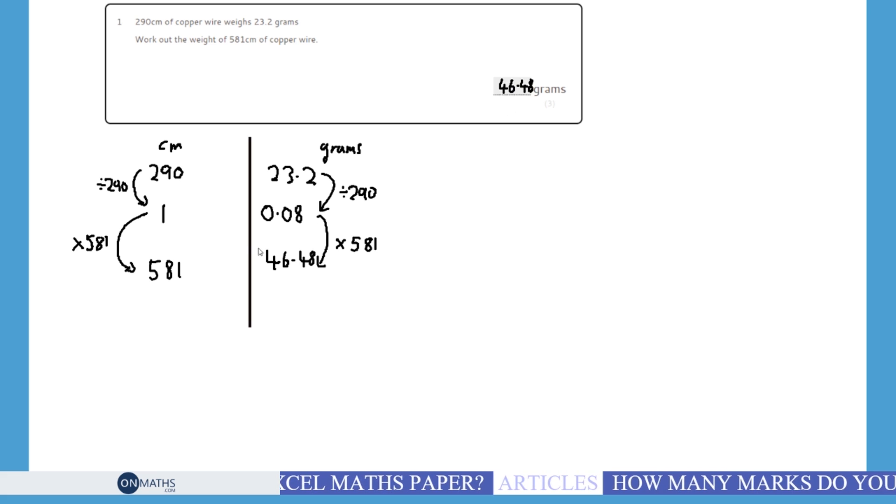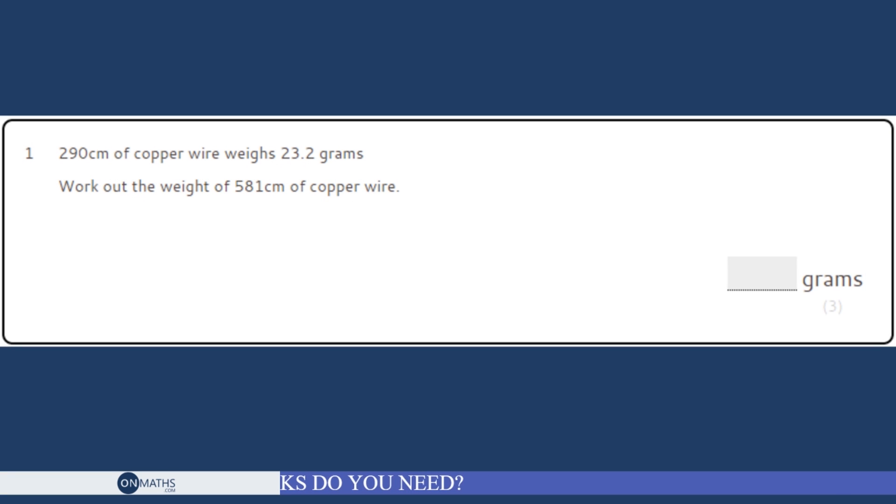On my calculator, 0.08 times 581, and I have the answer 46.48. Now looking at that, I'm going to write that in as the answer. Does it make sense? Well, that is roughly doubled—the length has roughly doubled. We're estimating that's nearly 600, that's pretty much 300, and this has doubled. So looking at that, yeah, I'm pretty confident that is correct. We can be quite happy with ourselves with that question.